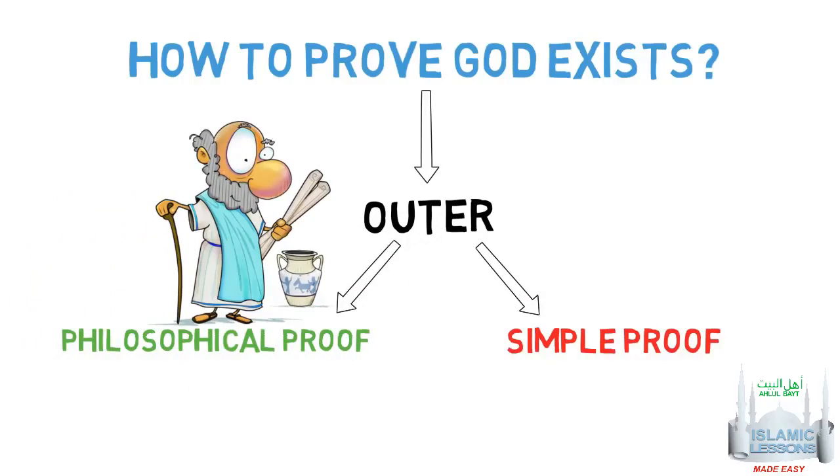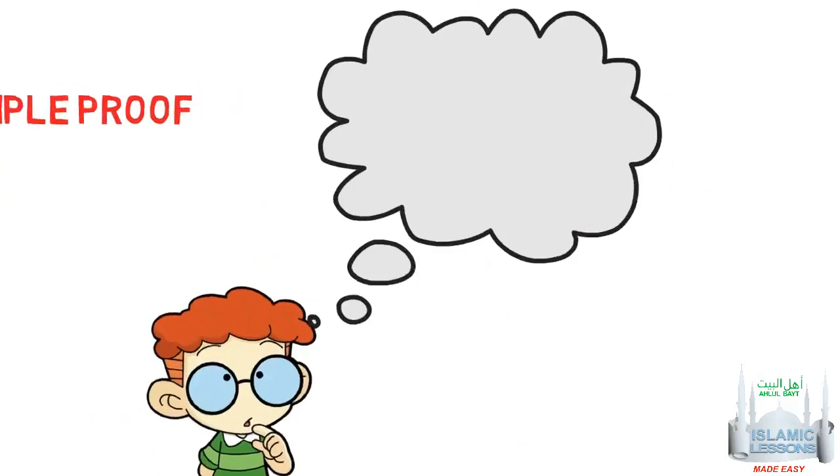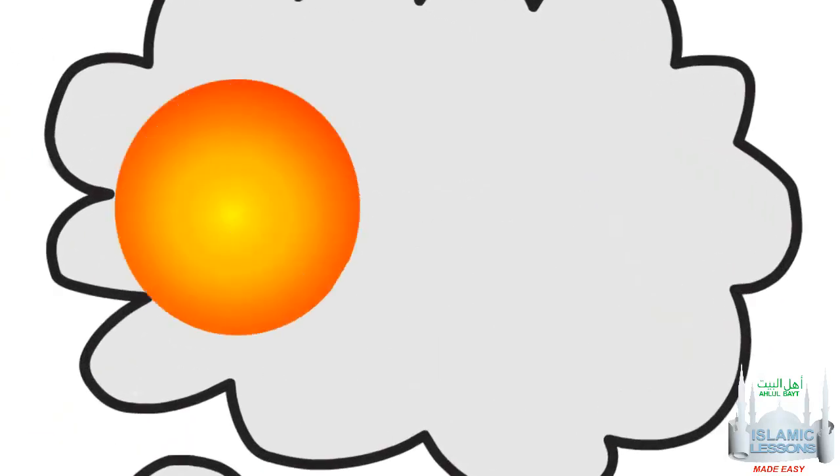We will be speaking about the simple proof in this lesson. When one ponders over the order and organization between things, it proves to any pondering person that it must have an organizer.